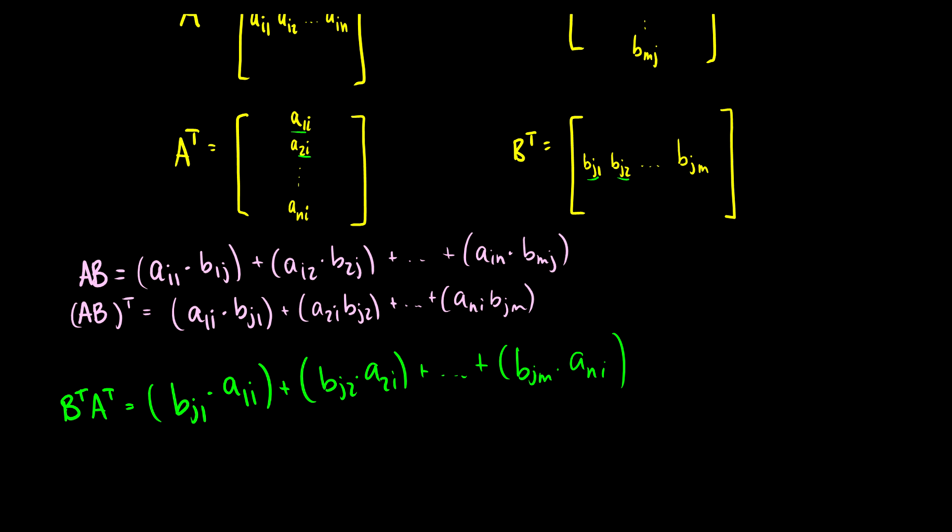And we can see here, these are exactly the same thing as we have above. So because these two multiplication entries are equal for any arbitrary row, that means that for all the rows they'll be equal.